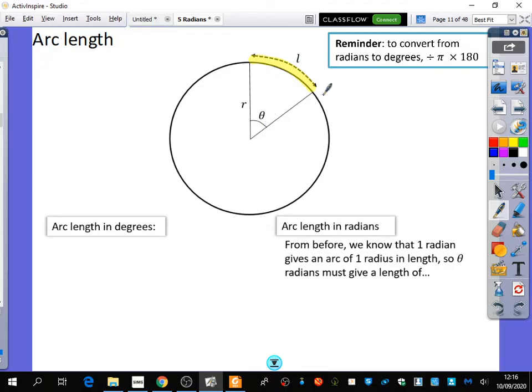Now if I wanted to find out how long this arc was, how would I find the length if everything was in degrees? You do the circumference, divide it by 360, and then times it by theta. Because we want theta out of 360, we want that fraction of the circle, and the circle's circumference is 2πr.